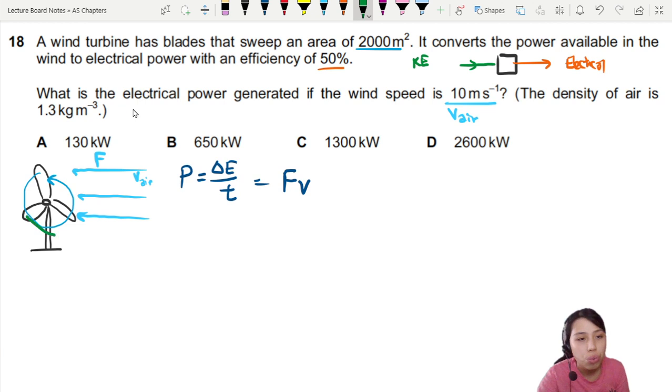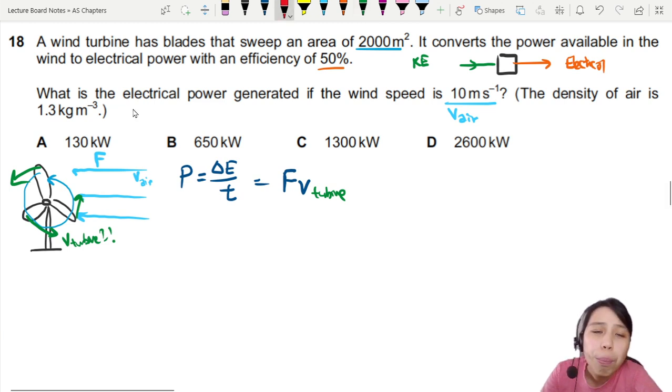So this turbine is rotating at a certain tangential speed. And we do not know this information. They only give us V of air. So general rule of thumb is whenever there are turbine questions in AS level, probably you do not want to use this because there's too many velocity, we don't have enough information.